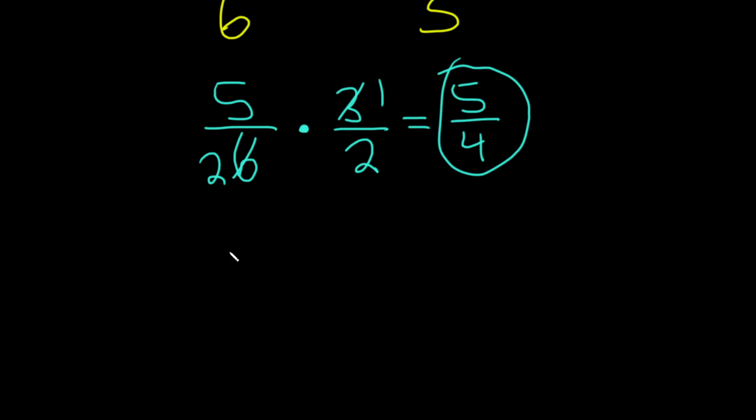Another way to do it is when you get here to 5 sixths times 3 halves, just multiply through. So 5 times 3 is 15, 6 times 2 is 12. Then you say, oh, okay, I see.